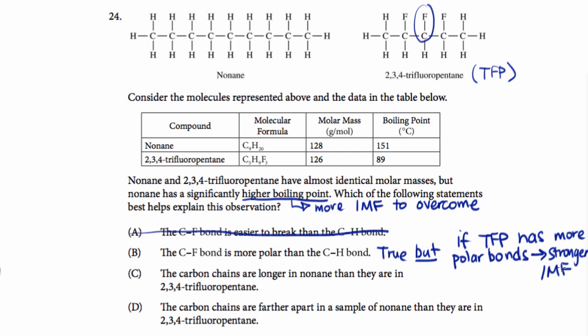Which would mean you would predict it to have a higher boiling point. And so that's the opposite of what we're actually seeing here. Even though our TFP has more polar CF bonds, it actually has a lower boiling point. So this observation, which is true, still doesn't explain what we're trying to explain.